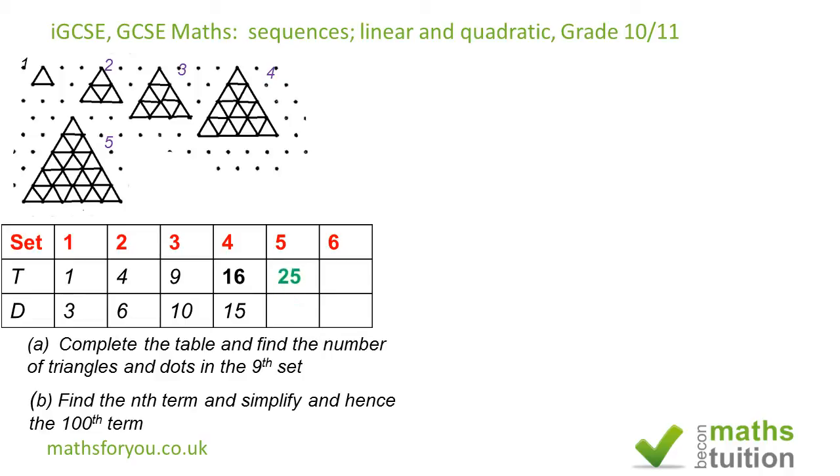Right, now the number of triangles, that's easy enough because what you've got there are essentially square numbers. So you've got 16, 25, and the next one is 36. That's what we've got there.